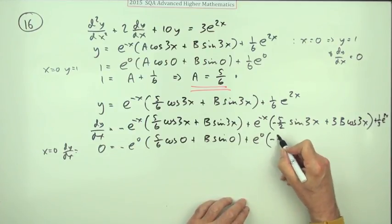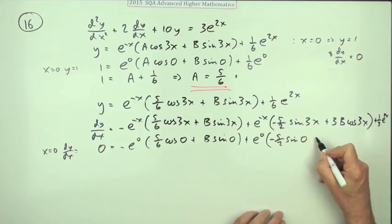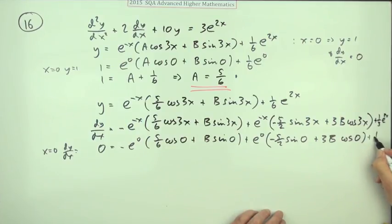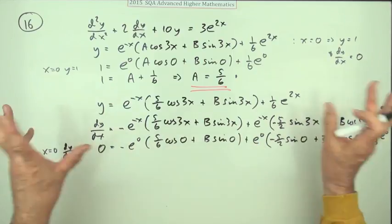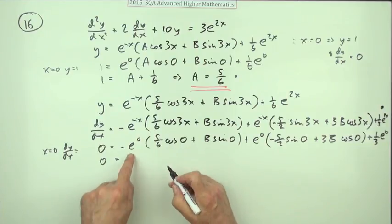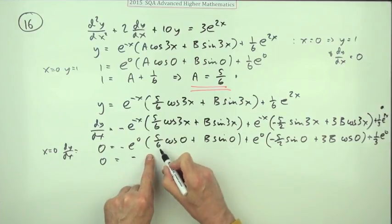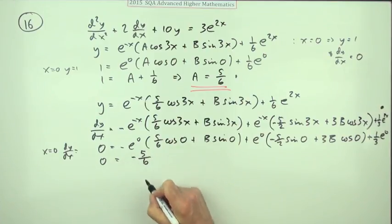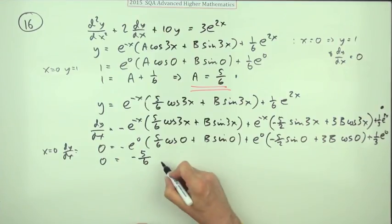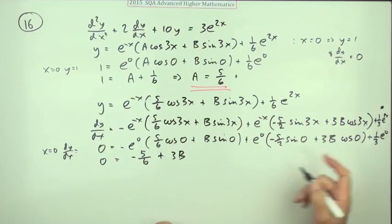So that equals, now just put zeros through all of this. I forgot there was one mark for differentiating it out. These final two marks look like the longest in the whole thing. So zero equals, now all the sine zeros disappear, the cosine zeros turn into ones. So this says you've got negative, and all you've got in this part is 5/6, and all you've got in this part is 3b, and this part is 1/3.